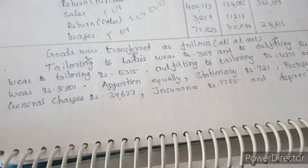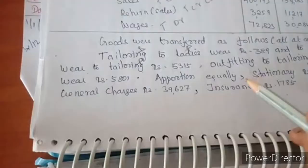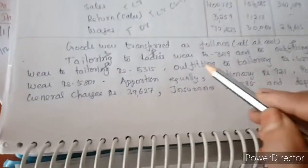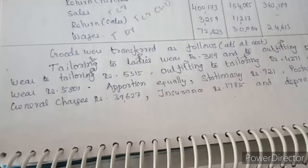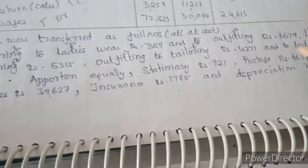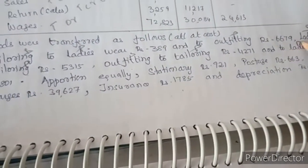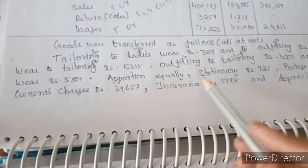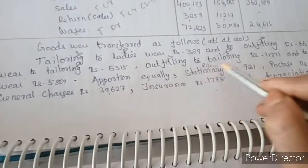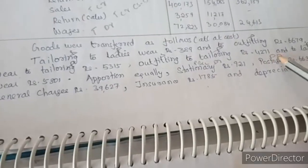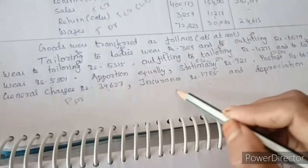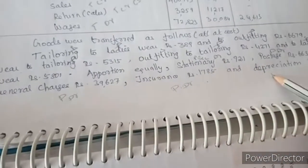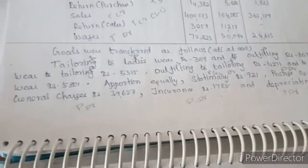Ladies Wear sales go to Tailoring purchase. They made this outfit to tailoring. Tailoring sales go to Outfit purchase. This is on the profit and loss debit side. Expenses — Stationery, General Charges, Insurance, Depreciation — all appear on the profit and loss debit side.